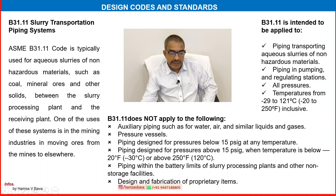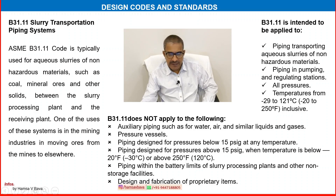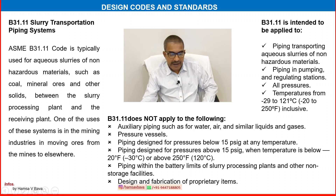B31.11 is not intended to apply to the following: auxiliary piping such as water, air, similar liquids and gases; pressure vessels; piping designed for pressures below 15 PSI at any temperature; piping designed for pressure above 15 PSI when the temperature is below 20°F or above 250°F; piping within the battery limits of the slurry processing plant and other non-storage facilities; and design and fabrication of proprietary items.